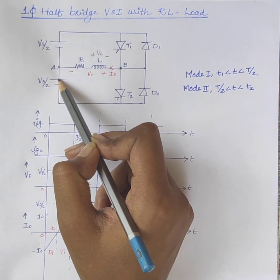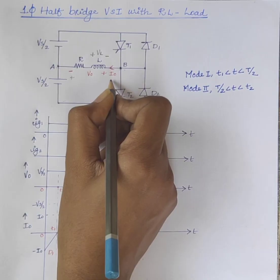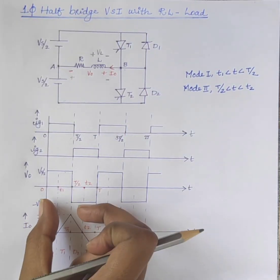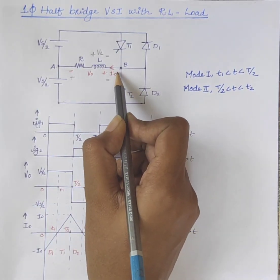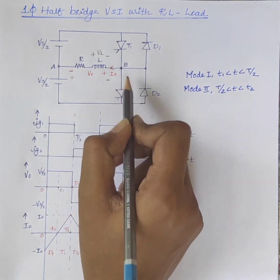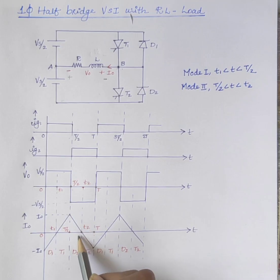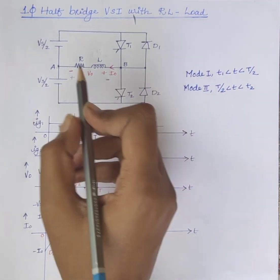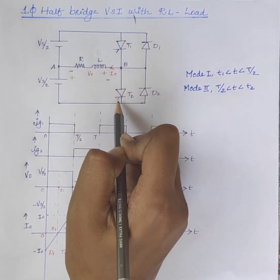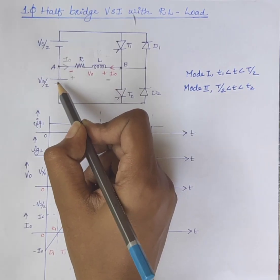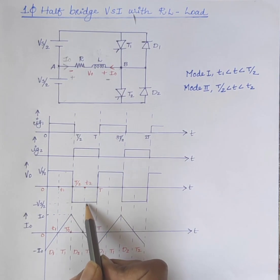The output voltage is minus Vs/2 during Mode 2. The load current is positive but gradually decreases. At instant T2, the load current reaches zero, meaning the energy stored in the inductor is fully dissipated. At instant T2, thyristor T2 is turned on and current flows through the path Vs/2 → load → T2 → back to Vs/2 in the opposite direction. The output voltage remains at minus Vs/2.